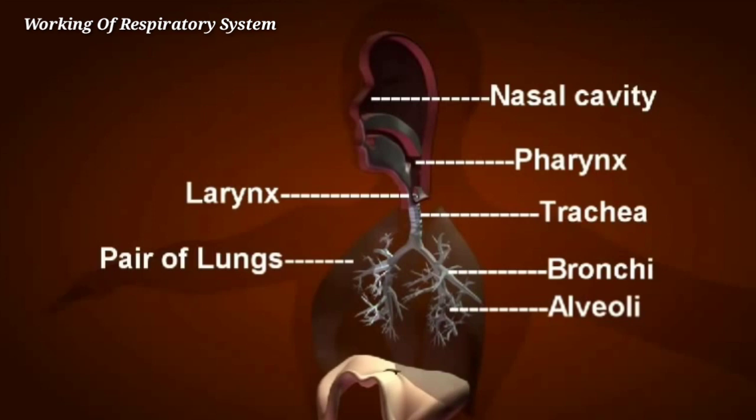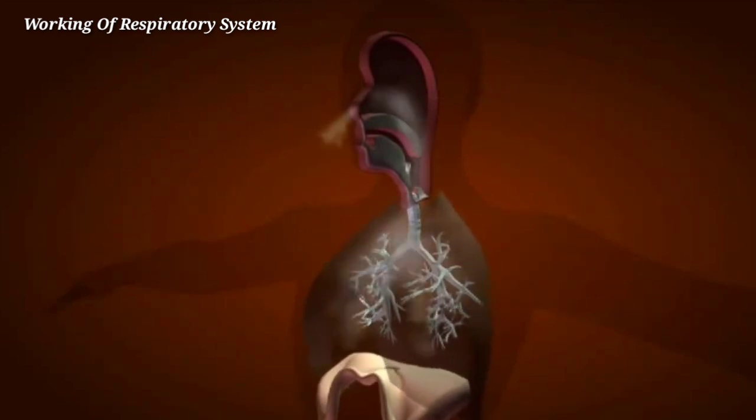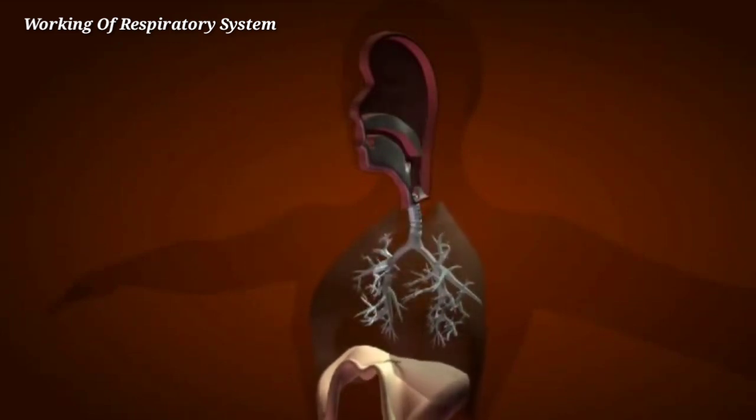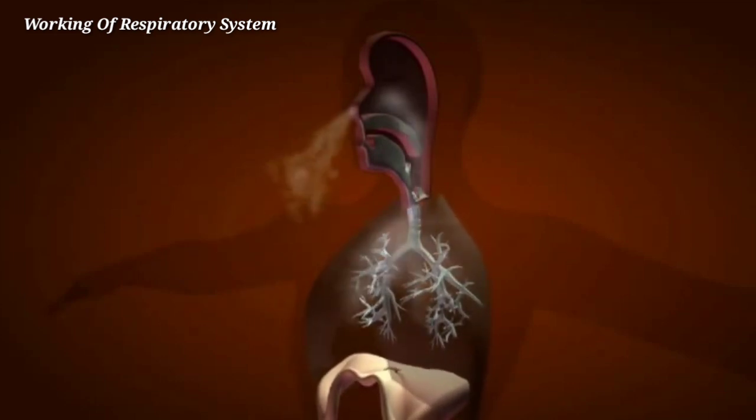Air moves through pharynx, larynx, trachea, bronchi, and alveoli, where gas exchange between oxygen and carbon dioxide takes place.